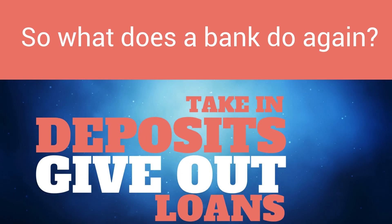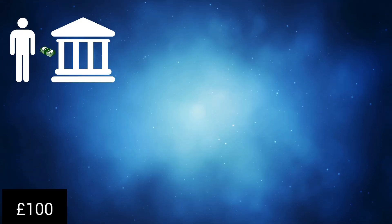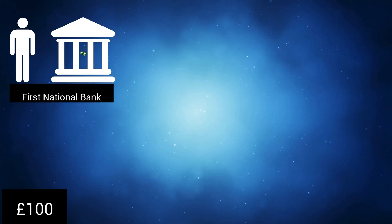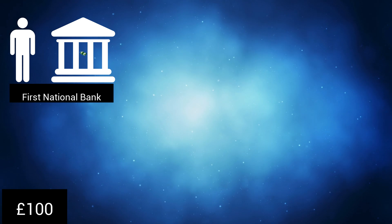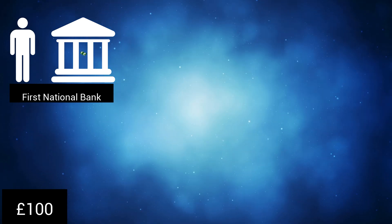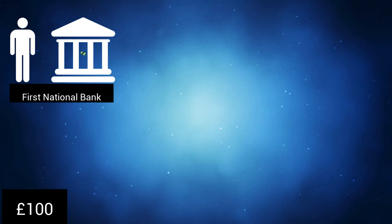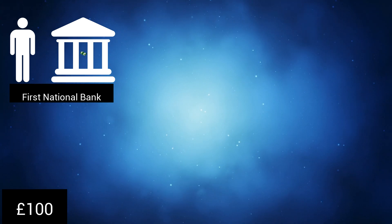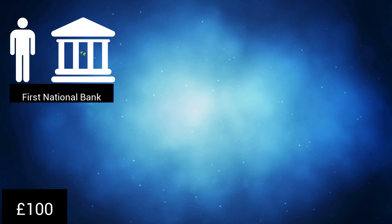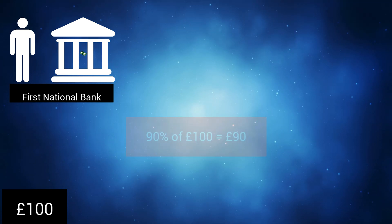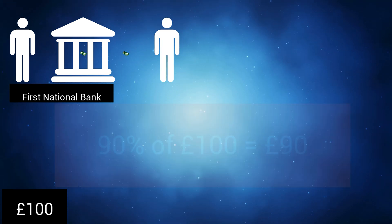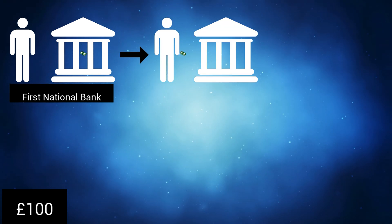Now let's look at how new deposits can be used to create more money. Say you take £100 in cash and deposit it at your bank — we'll call this bank First National Bank. First National Bank tells you that you have £100 in your bank account, but in reality that money won't just sit in the bank. The bank will lend some of that money out to other people, but keep some of your money back in case you want to withdraw any. Let's say they lend out 90% of the money — that's £90 lent to someone else, who in turn deposits that money in their bank account.